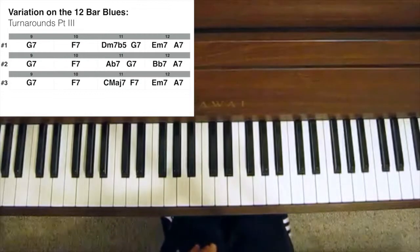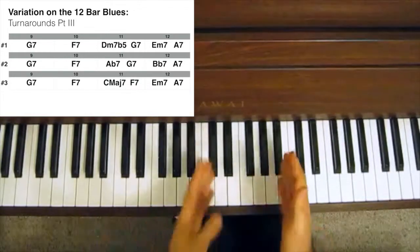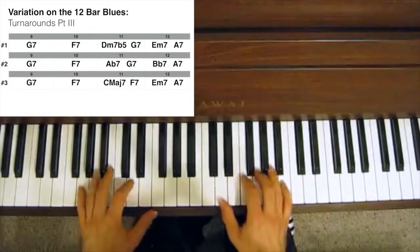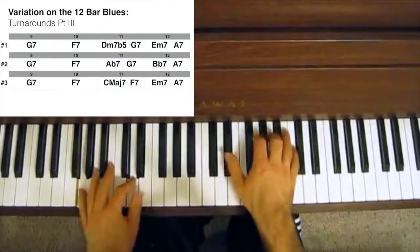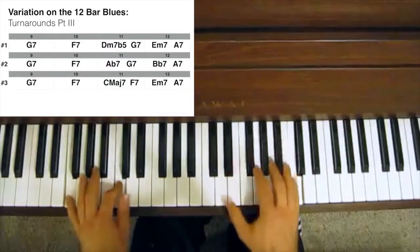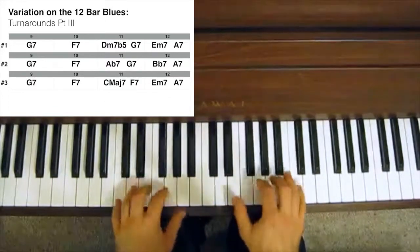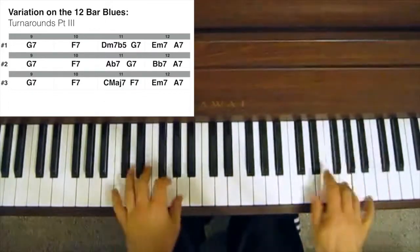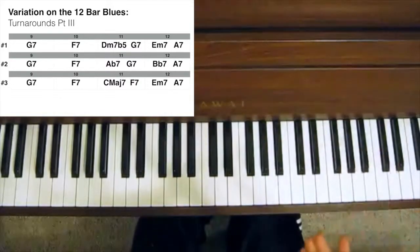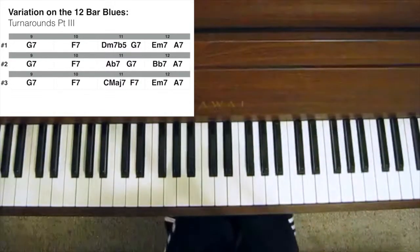So the last four bars of a 12-bar blues with that turnaround would then sound something like this. And then you keep on improvising. Right, so that's nice and easy.